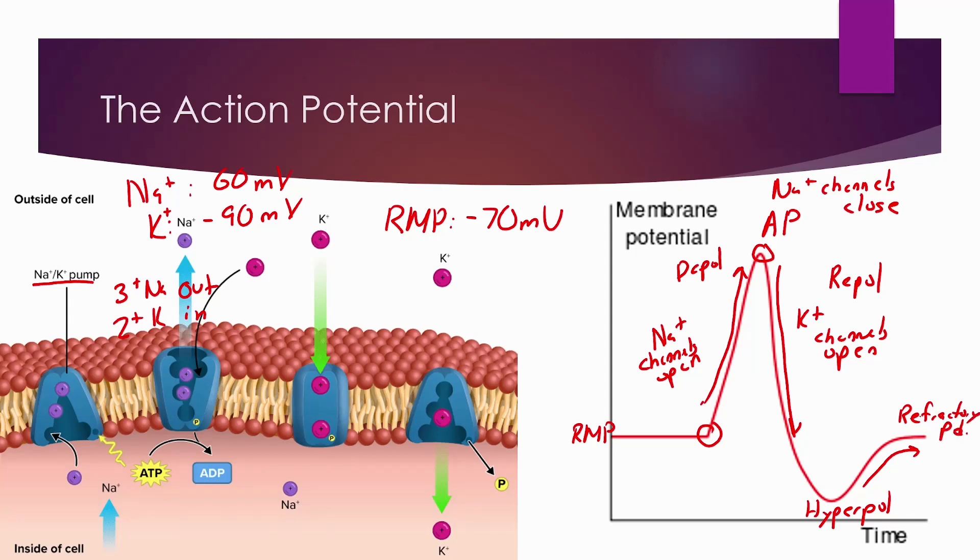There are two different refractory periods. One is called the absolute refractory period, where you enter the state of hyperpolarization and you must reach the original resting membrane potential. Another one is called the relative refractory period, where after you go through hyperpolarization, you need more of a stimulus to reach a new depolarization, which would be an increase in resting membrane potential.